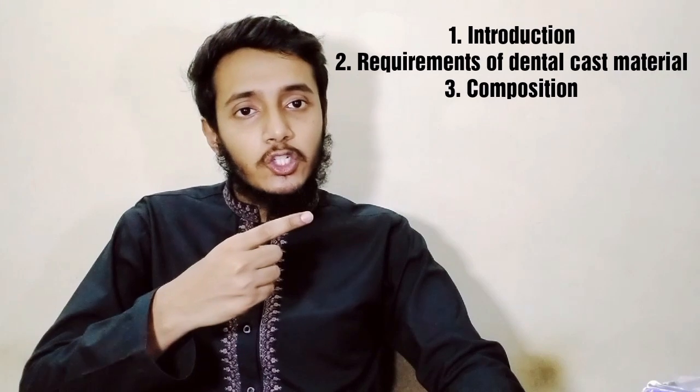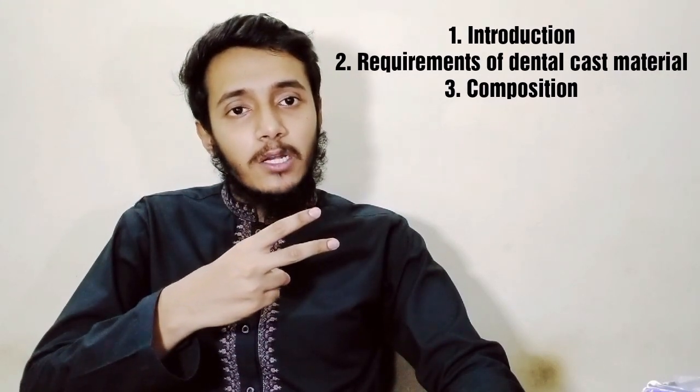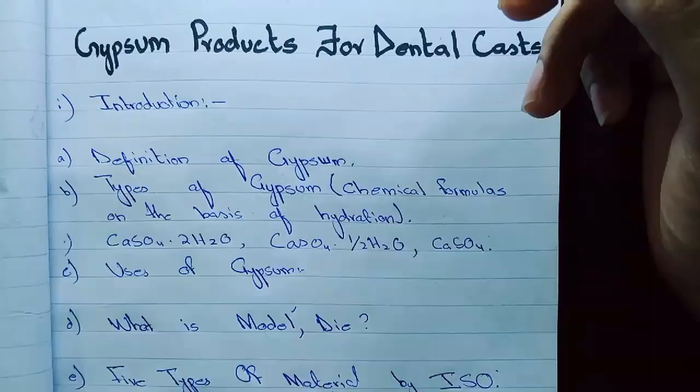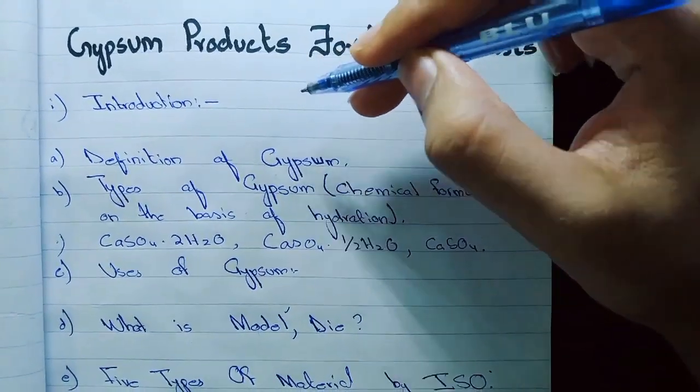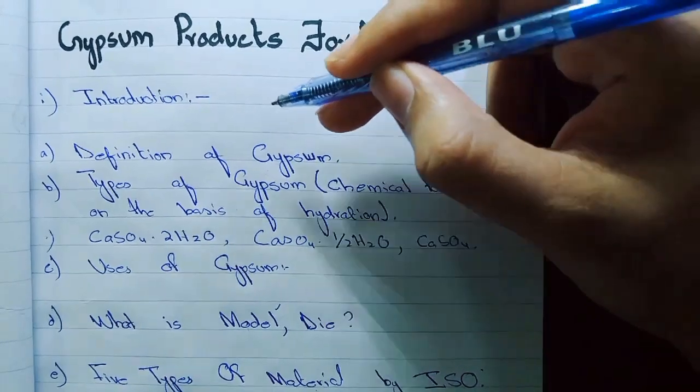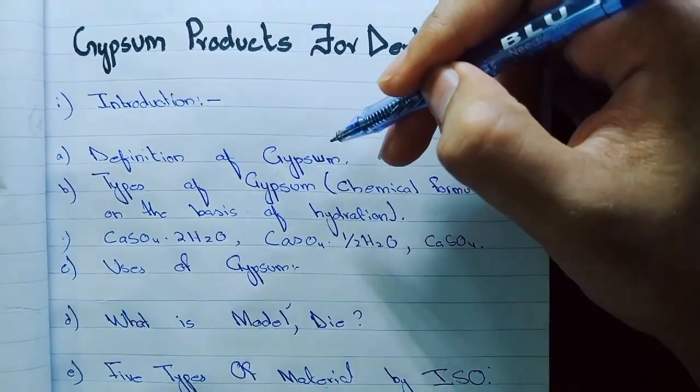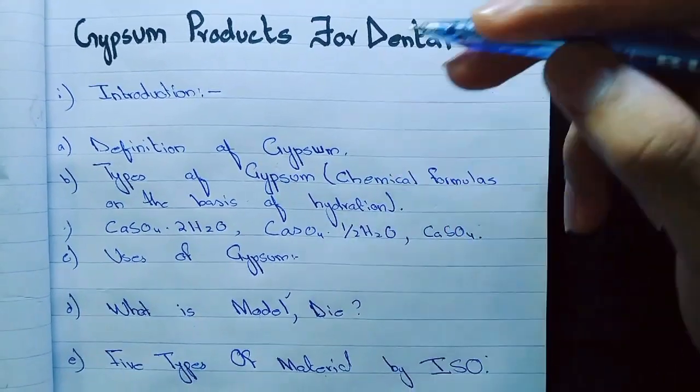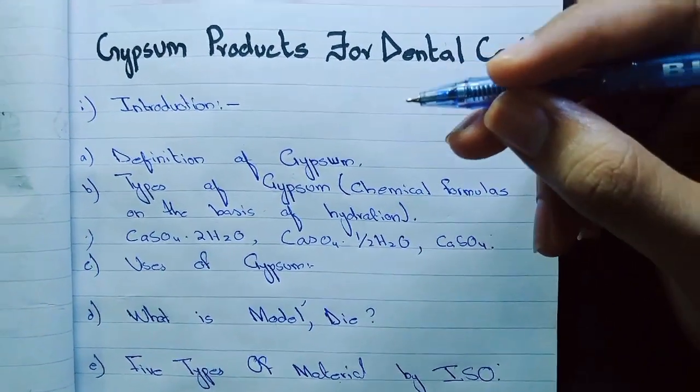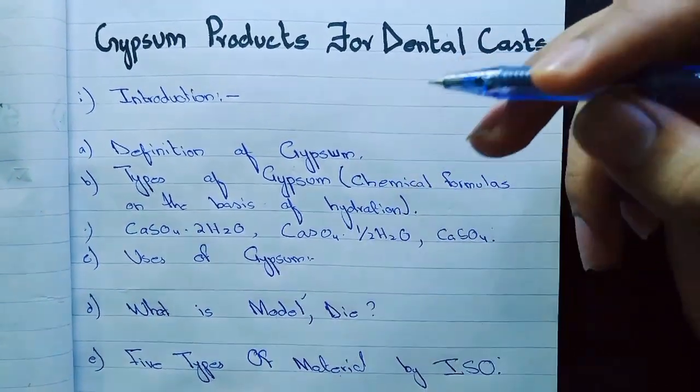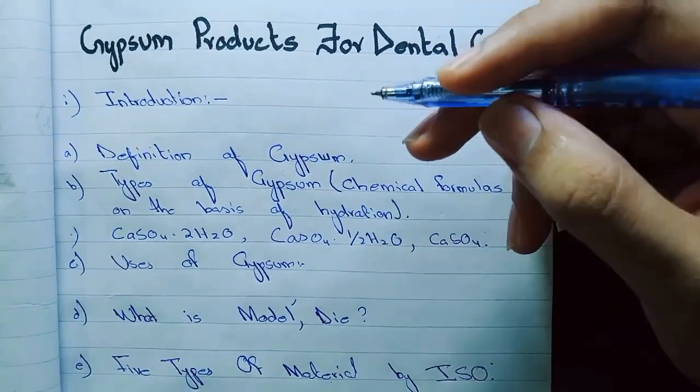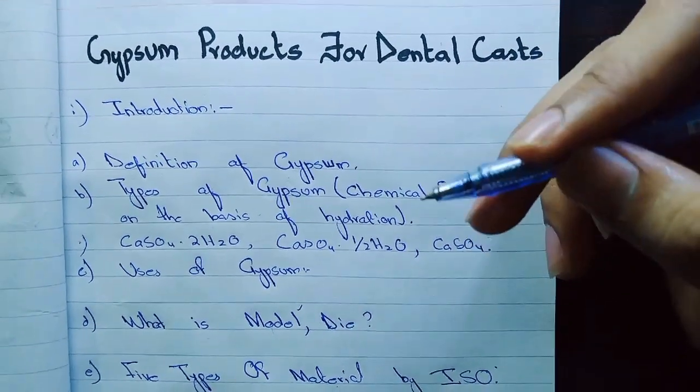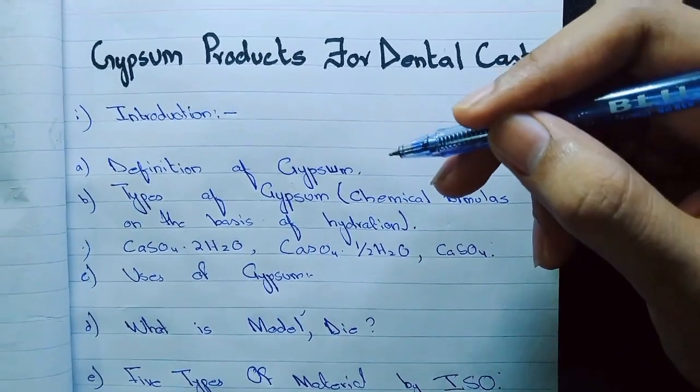In this very first video we will be discussing about the gypsum products. We will discuss the three main headings sequentially from the book: the introduction, the requirements of dental cast materials, and lastly the composition. Starting from the introduction, I have divided it into subheadings. First we will learn the definition of gypsum. Now what is gypsum? Gypsum is the naturally occurring white powdery mineral having chemical formula CaSO4.2H2O and a chemical name of calcium sulphate dihydrate.